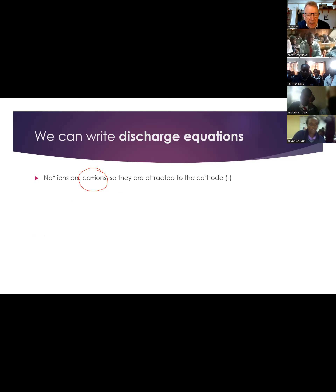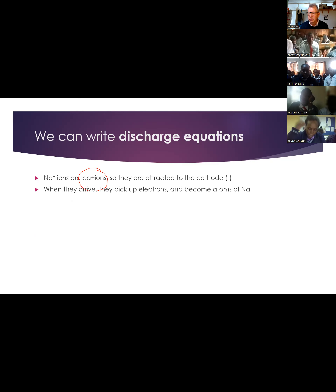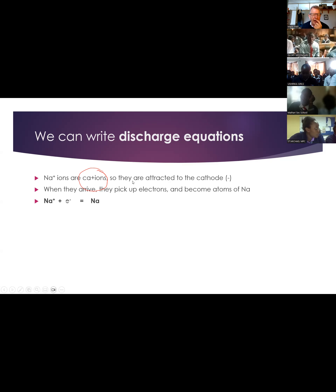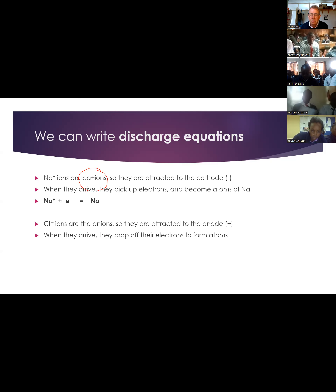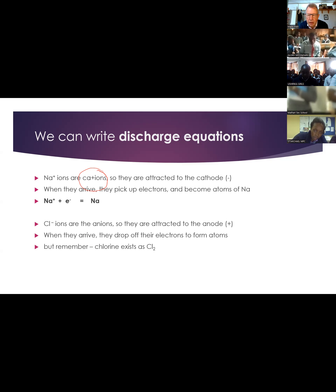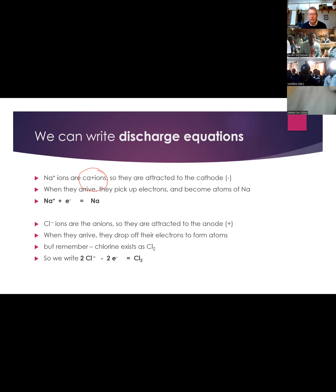So Na+ ions are cations. To get rid of their charge, they have to pick up electrons. So they go to the negative electrode and they gain electrons - and if you remember from last time, that is reduction. So they pick up electrons and they become atoms. Na+ plus e- goes to Na. Whereas the chloride is Cl-, so they have to lose electrons to form atoms. But because chlorine exists as a diatomic molecule - two atoms in each molecule - we have to write: 2Cl- minus two electrons goes to Cl2.